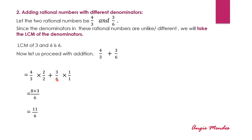6 is already here — the LCM is 6. So what number would we multiply by 6 to get 6? We multiply it by 1, and any number multiplied by 1 gives the number itself. In the next step, 4 multiplied by 2 is 8, and 3 multiplied by 1 is 3. The denominators have now become the same: 3 multiplied by 2 is 6, and 6 multiplied by 1 is 6. Taking the common denominator, we have 8 and 3 in the numerator. Adding the numerators, we get 11 upon 6.